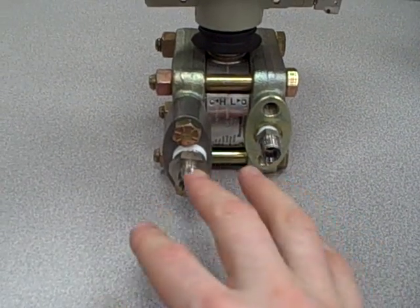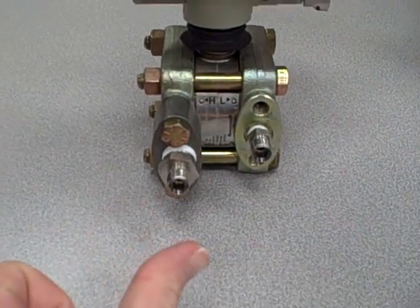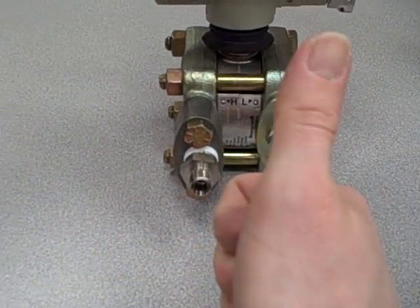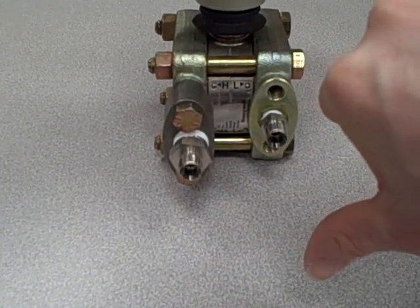So, now we have a bi-directional flow measurement device. Flow left to right, signal up. Flow right to left, signal down.